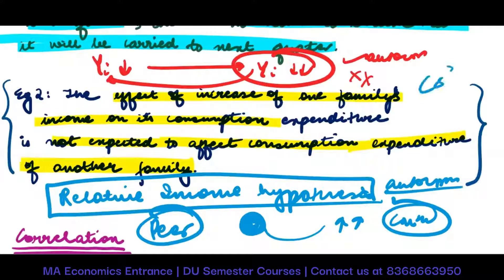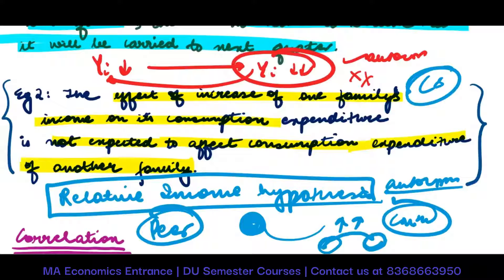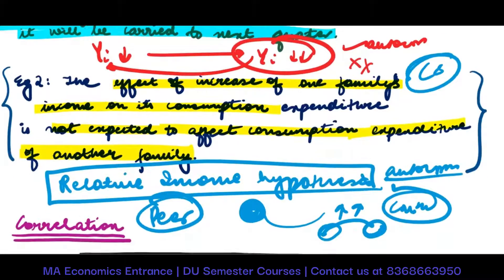Although this is a cross-sectional dataset — I'm talking about different families, not different periods of time — if one family's expenditure is affecting another family's expenditure, then we are supposing there is autocorrelation. Whereas if it is not affecting, then there is no autocorrelation.